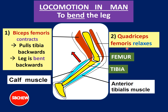For quadriceps femoris, the name comes from the fact that it has four muscles — four parts in this muscle. That is why it is called quadriceps femoris. We do not need to know the detailed structure.